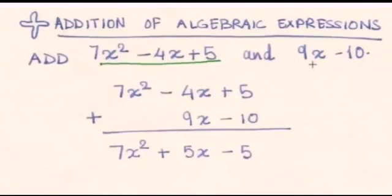Another method of addition is column method. Write each expression in a separate row and arrange their like terms in such a way that they are one below the other in a column. In this example, we arrange in column method: 7x² minus 4x plus 5. We write the 9x under the 4x because they are like terms. We write the minus 10 under the 5. They are the constants.